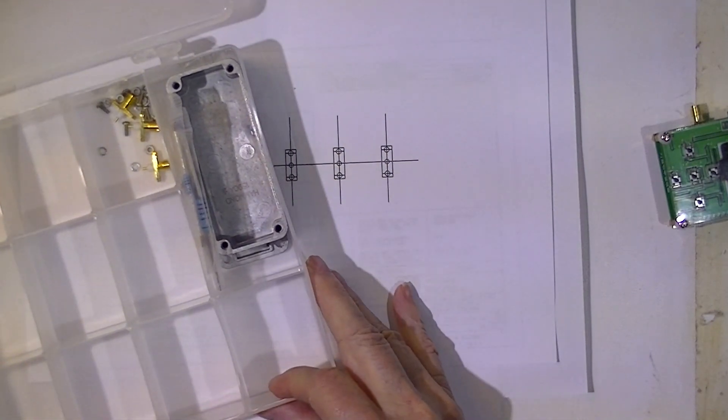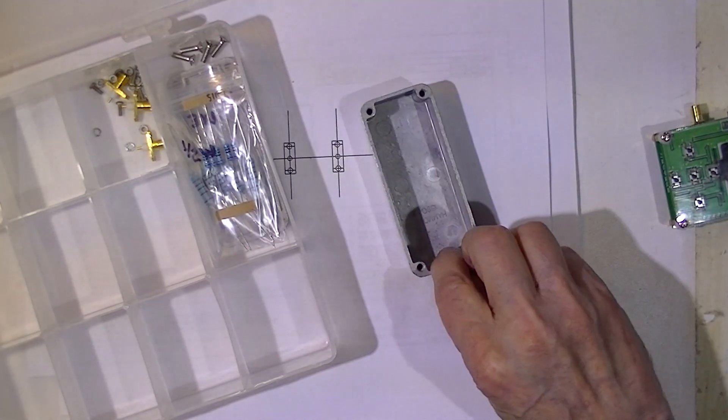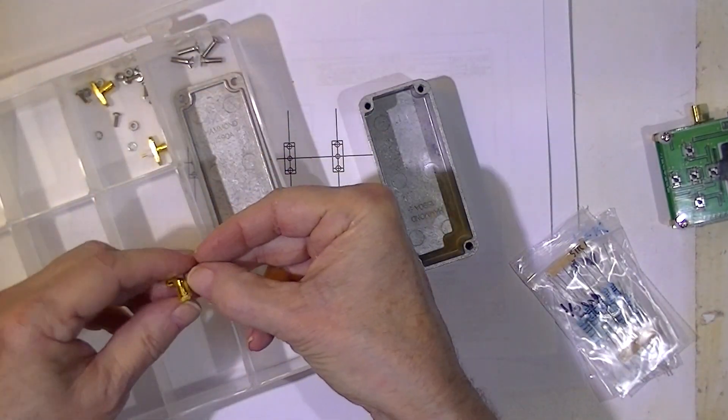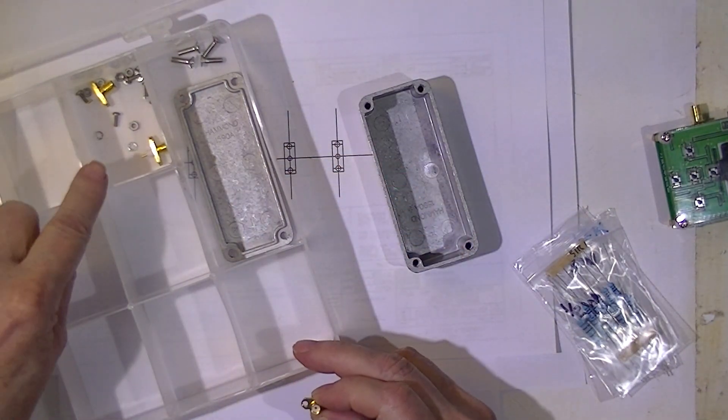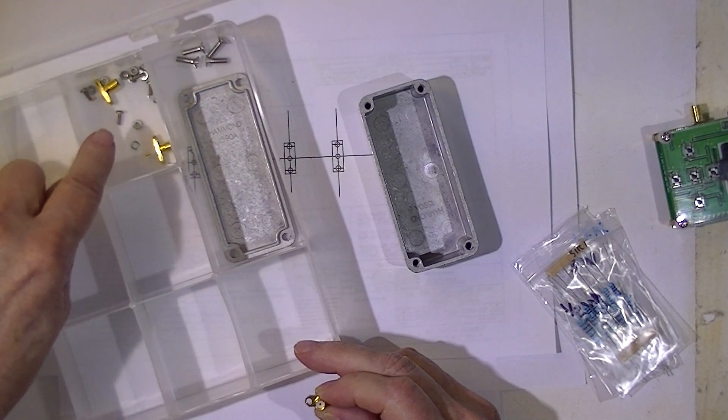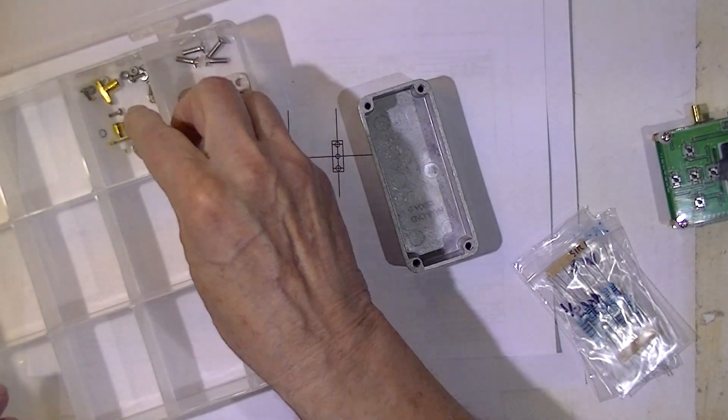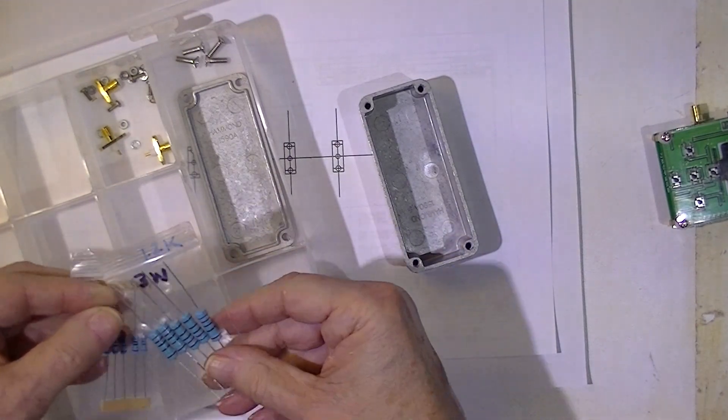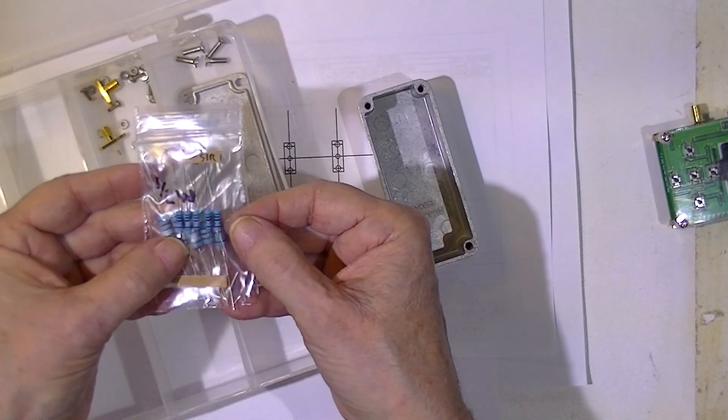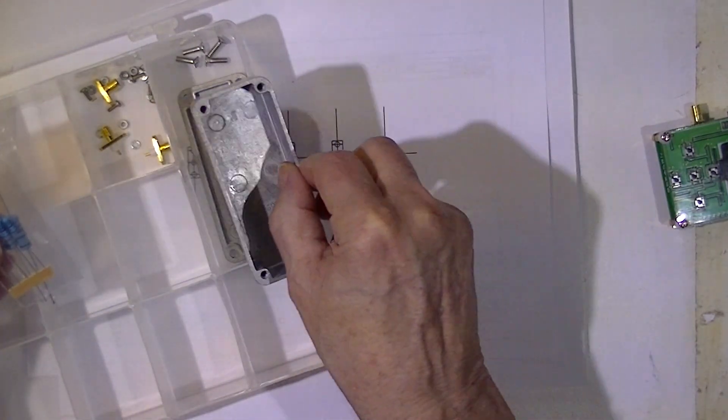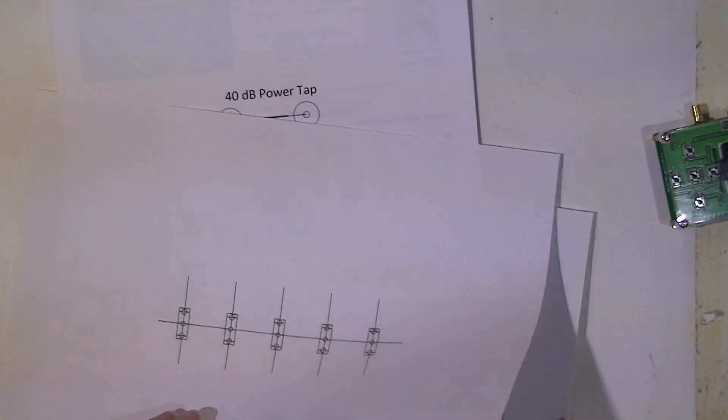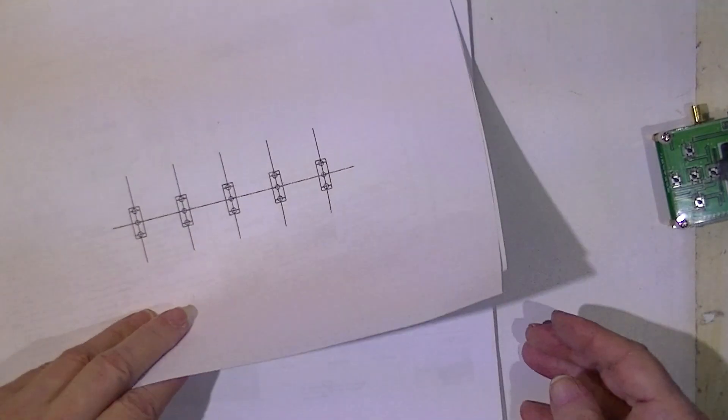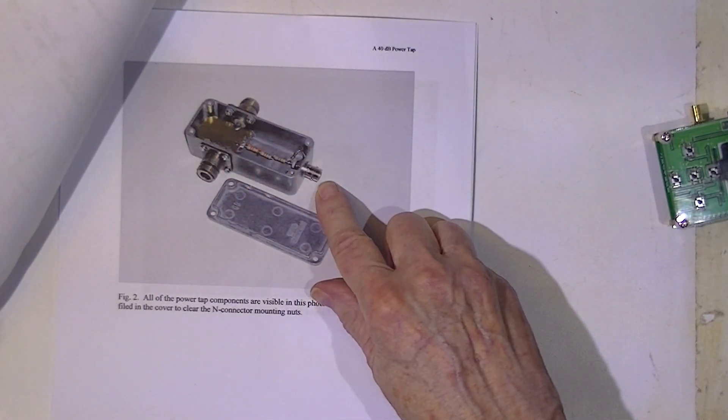Then I began assembling my components. Here's the little Hammond box and its lid and screws. Here are the two-hole SMA connectors. And I have some number 3 machine screws, lock washers and nuts. I have some 1.2K 3 watt metal film resistors and a half watt 51 ohm resistor. So I'll measure up my Hammond enclosure and drill three sets of holes, and I'll replace these connectors with the two-hole SMA connectors.